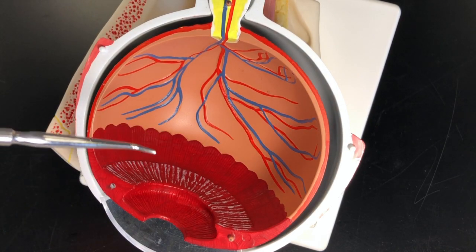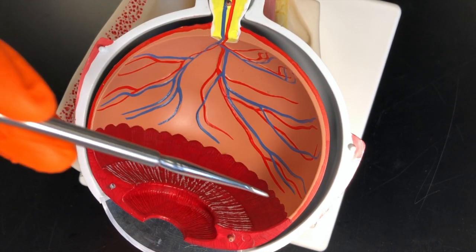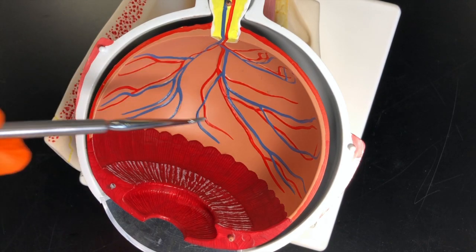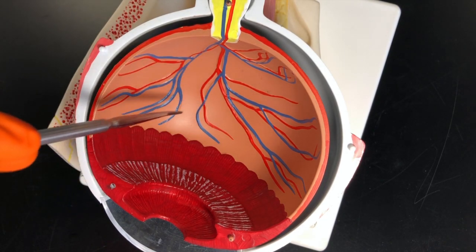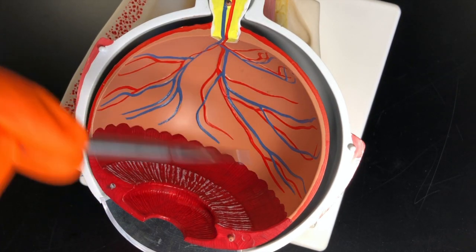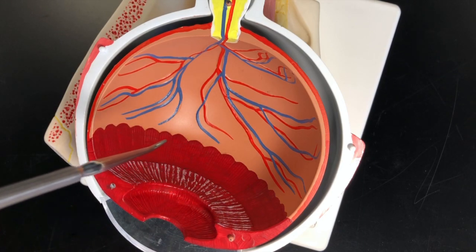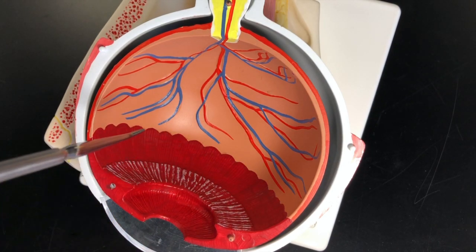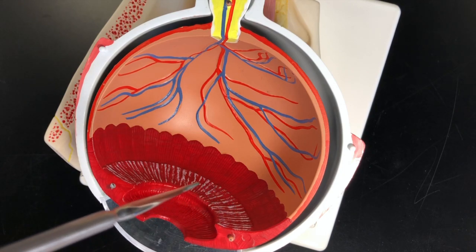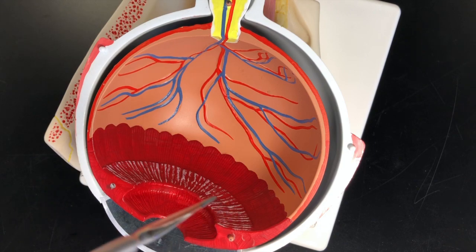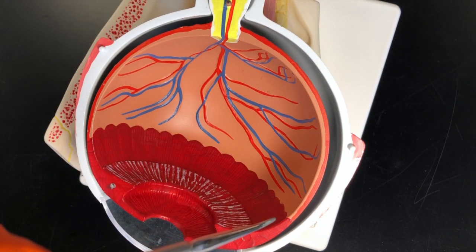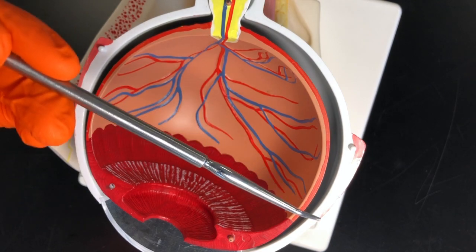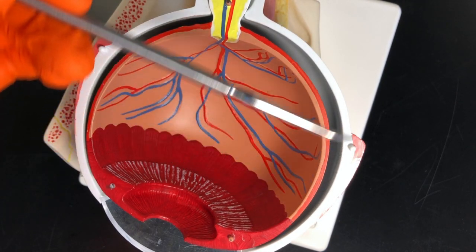Finally, we have the neural tunic or nervous tunic. That is made up of the retina, which is all of this right here. Technically, we have two portions of the retina. We have this photosensitive area, which is this lightish color right here. And then this portion right here is the non-photosensitive area. That is marked by this border called the ora serata.